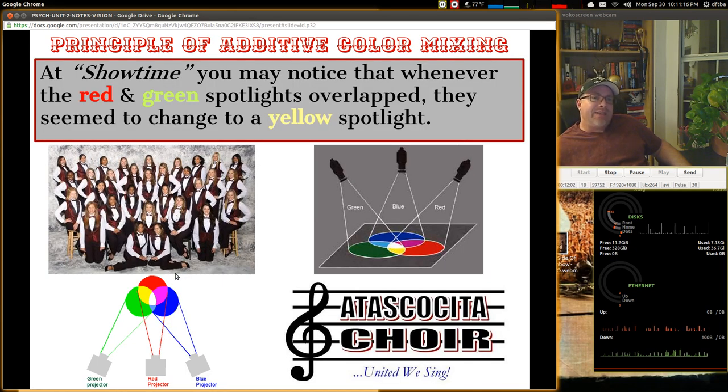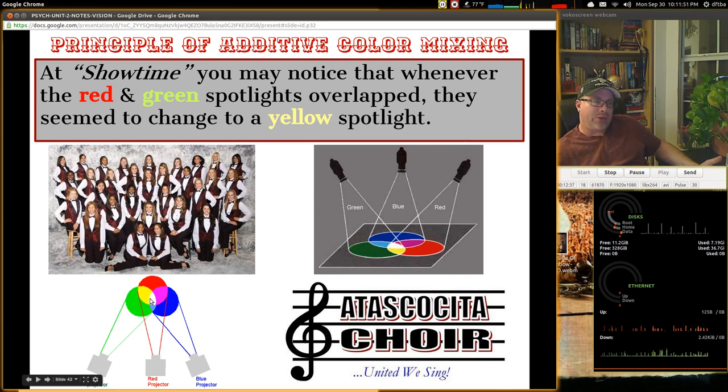So let's look at the principle of additive color mixing. At showtime, the choir thing that is so well done every year. The choir folks do a tremendous job with this show. If you're someone who's never gone to it, you should check it out. There's some really great stuff. But you may notice that whenever they're shining the red and the green spotlights, and they overlap, they seem to change to the color yellow for the spotlight. And you can see it here at the top. Green and red form yellow. And green and red here form yellow.